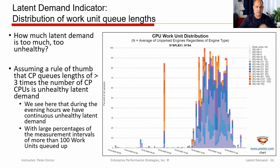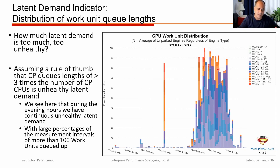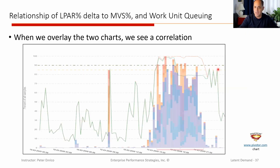If I superimpose those two charts over each other, I'm looking at the MVS utilization along with the LPAR utilization. We know during this period of time we're capping from the other report. But if I look at my unhealthy latent demand, notice that the unhealthy latent demand occurs during these periods of time. That just goes to show you the relationship of the latent demand and the queue depth accordingly.